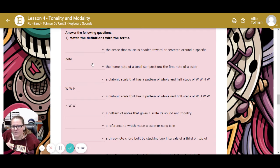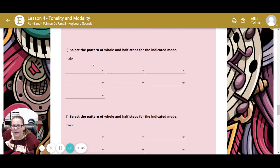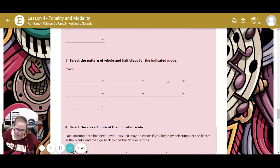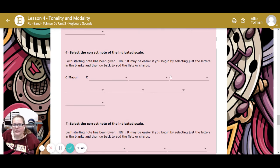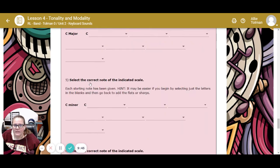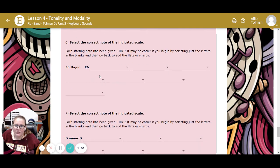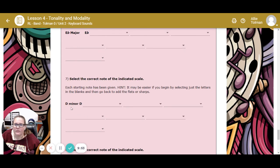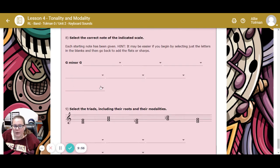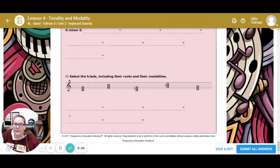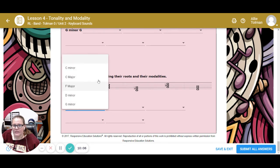Now they want you to match the following terms. These particular ones are the vocab from above. Now select the pattern whole, whole, half, whole, whole, whole, half, or the minor pattern. Select the correct notes in the C scale. Select the correct notes in E-flat major. Select the right notes in D minor, G minor. Down here, they want you to tell me what the triad is, including their roots and modalities. If you click on this, is it C minor, C major, F major, D major, G major?